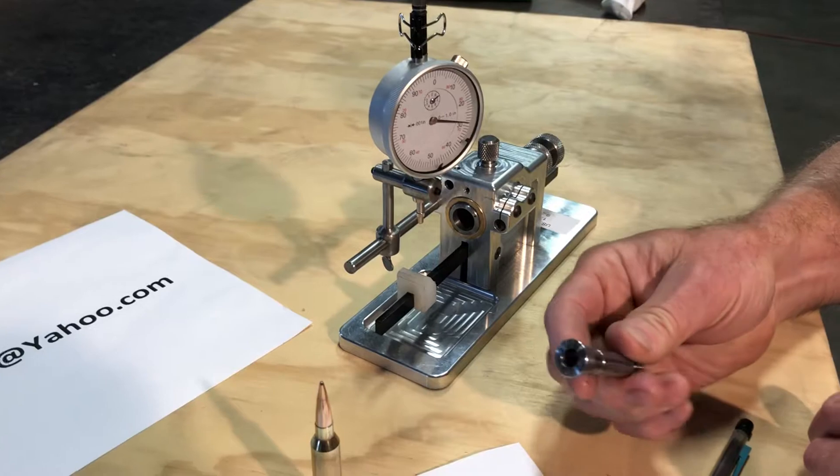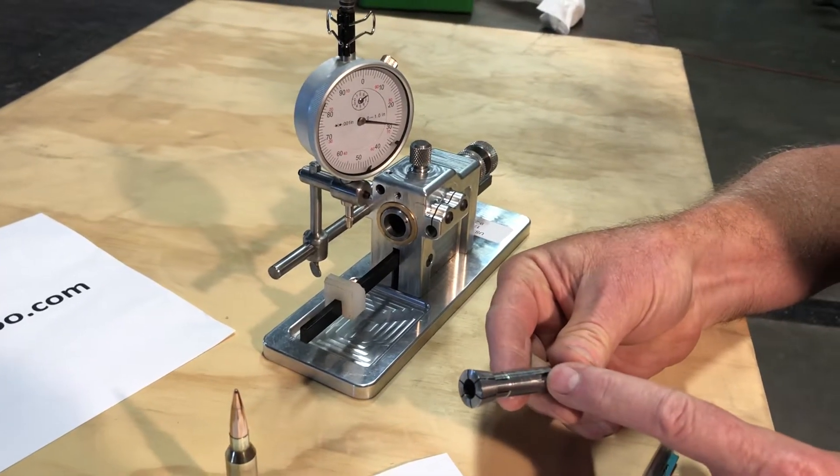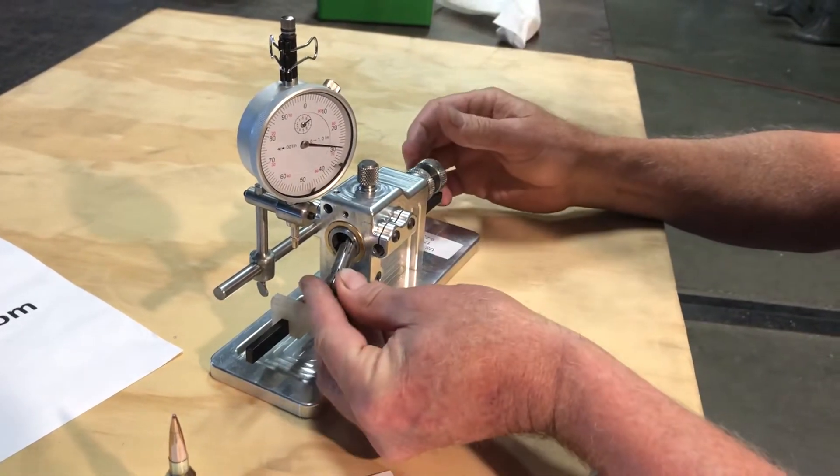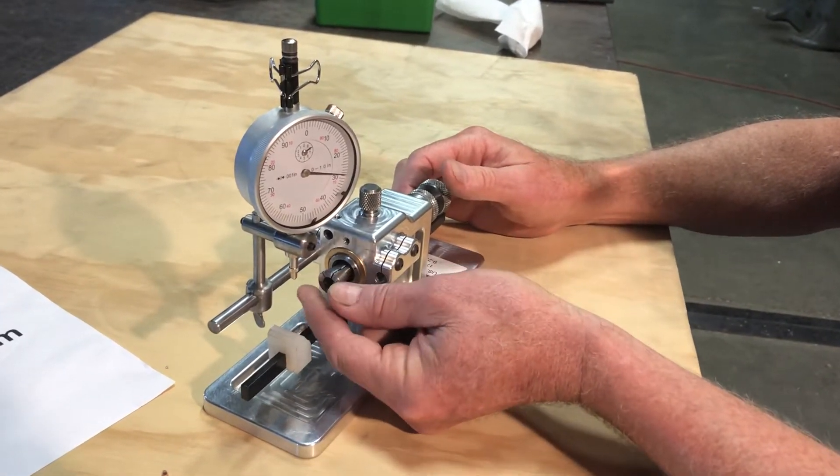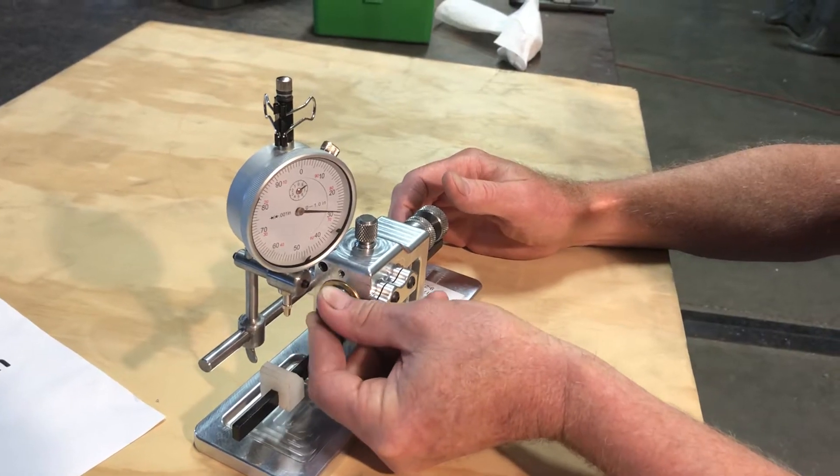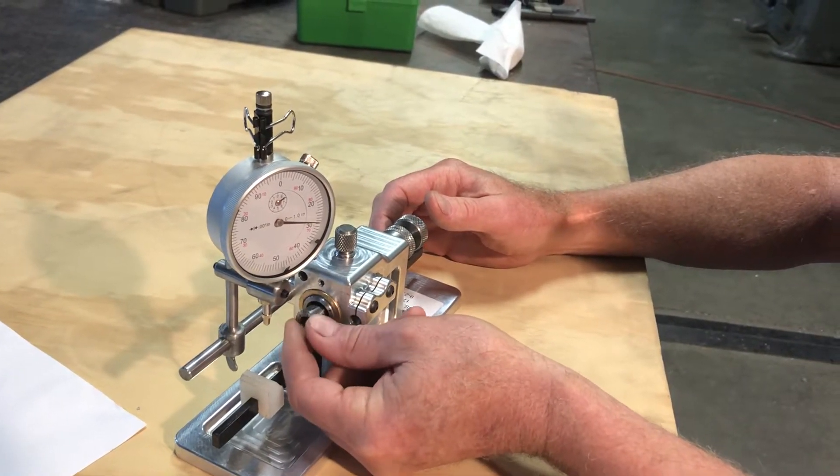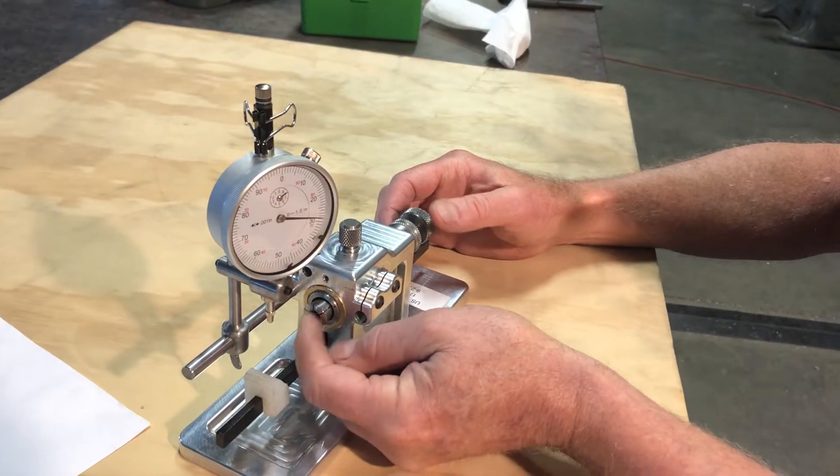The way the collet works is this slot. There's a pin in there. You can see that. Just rotate it around until it falls in. There it's in.